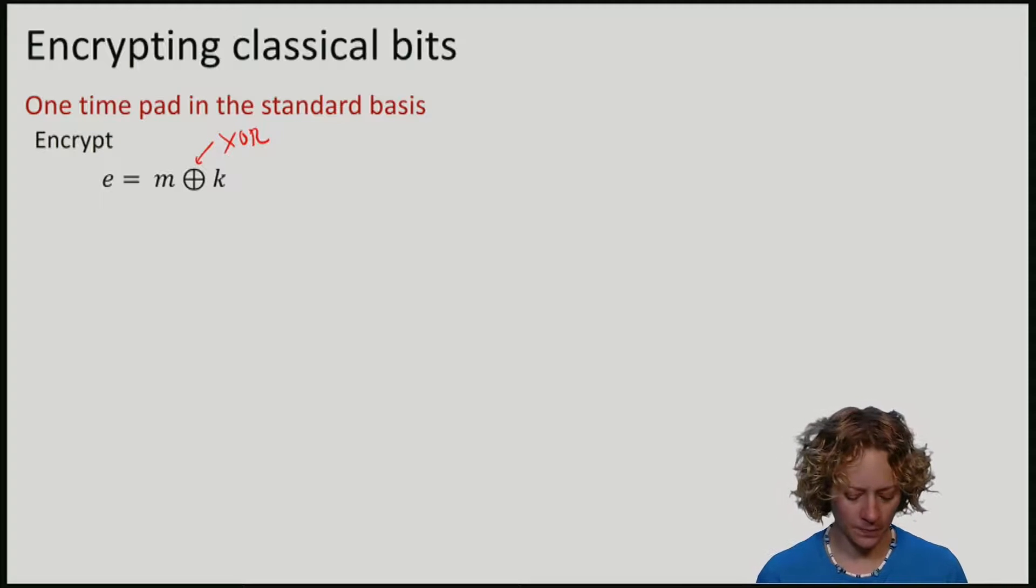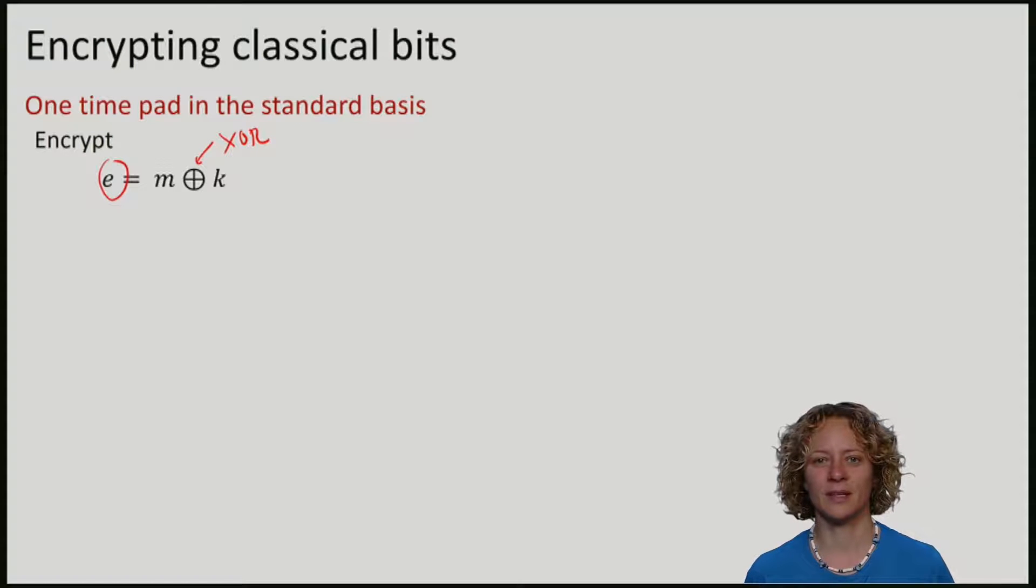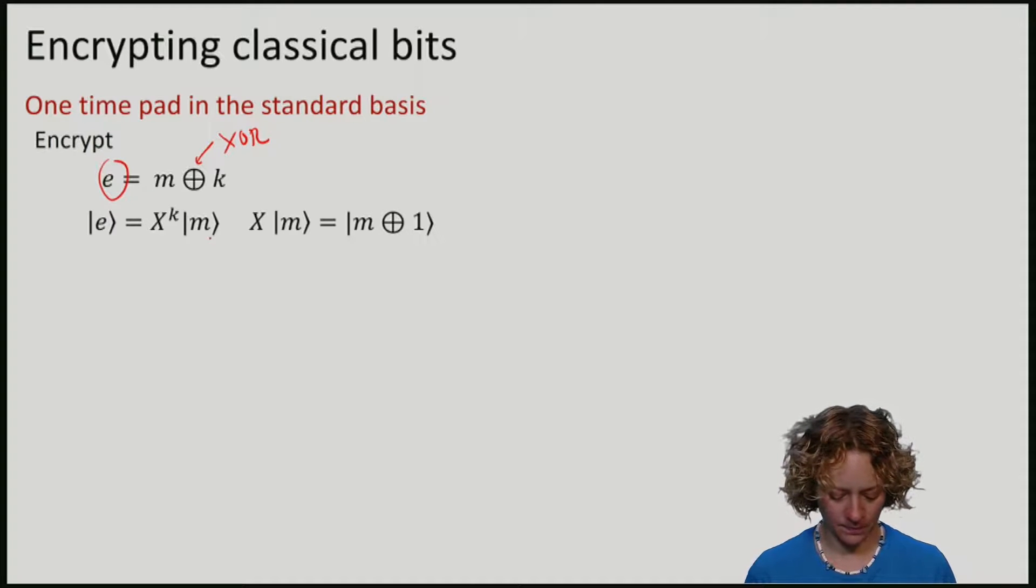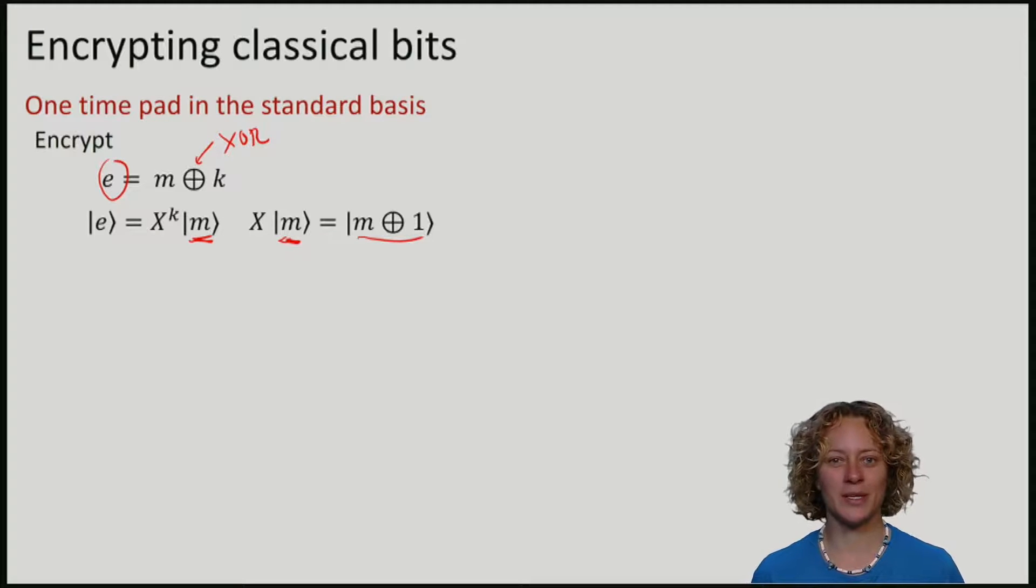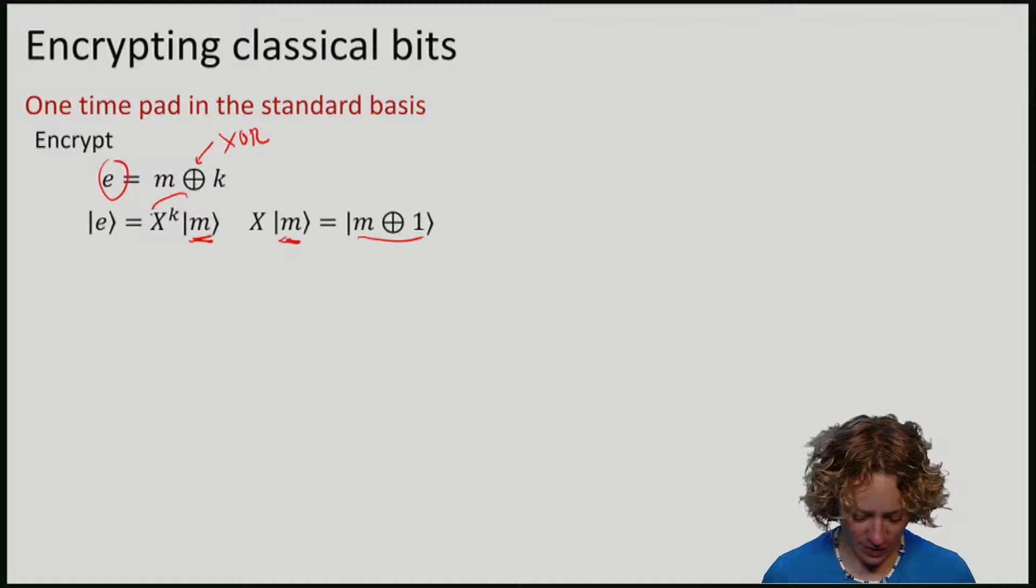Remember that to encrypt a classical message bit M, Alice XORs it with her key bit K. That gives her one bit E of encrypted text. Now remember that we can write a classical bit M in terms of the standard basis as a quantum state, namely ket M. Now computing the XOR is the same as applying a bit flip operation if K is 1 and doing nothing when K is 0. Remember that X is the quantum operation that does the bit flip. It takes M to M plus 1.